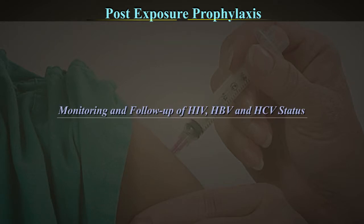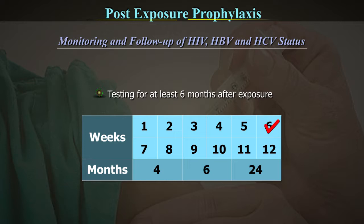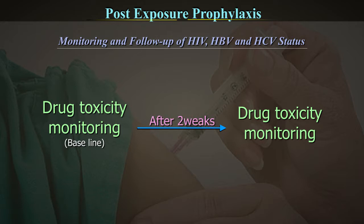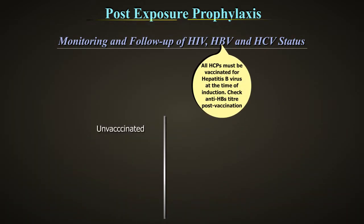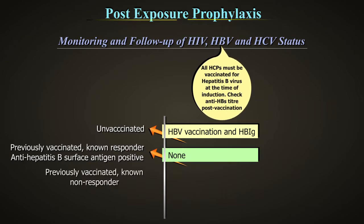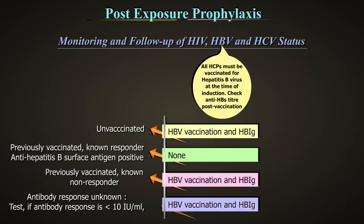Monitoring and follow-up of HIV, HBV and HCV status: follow-up of exposed healthcare professionals includes long-term counselling, education and testing for at least 6 months after exposure — at 6 weeks, 12 weeks and 6 months. If PEP is used, drug toxicity monitoring should occur at baseline and after 2 weeks. HBV immune status management: unvaccinated persons receive HBV vaccination and HBIG; previously vaccinated known responders (anti-HBs positive) require no PEP; previously vaccinated known non-responders receive HBV vaccination and HBIG; those with unknown antibody response should be tested — if response is less than 10 IU/ml, receive HBV vaccination and HBIG.